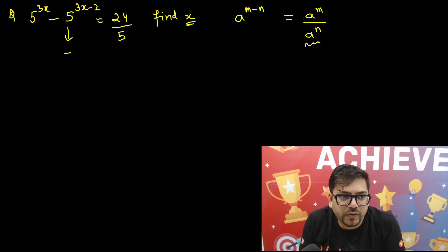So we'll do the same thing here. 5 raised to power 3x minus 2 can be written as 5 raised to power 3x upon 5 raised to power 2, and this 5 raised to power 3x will remain as it is. Here we have a minus equals to 24 by 5.